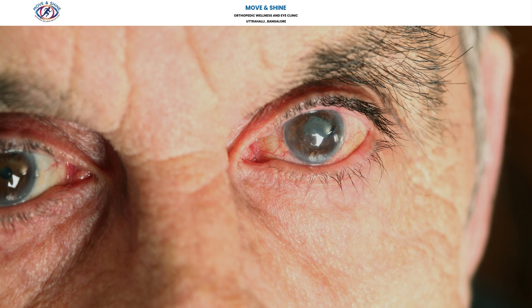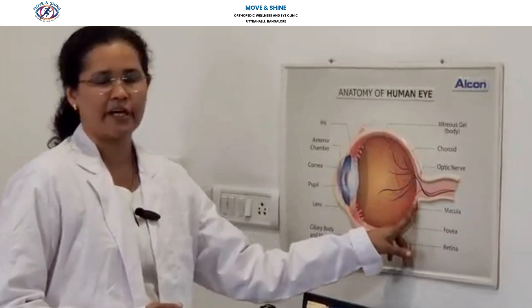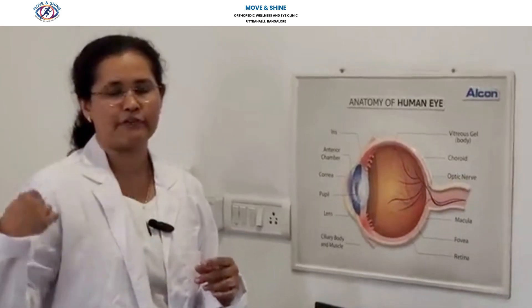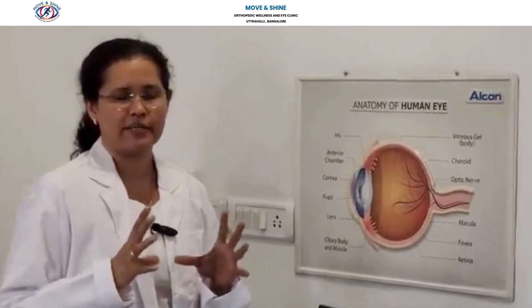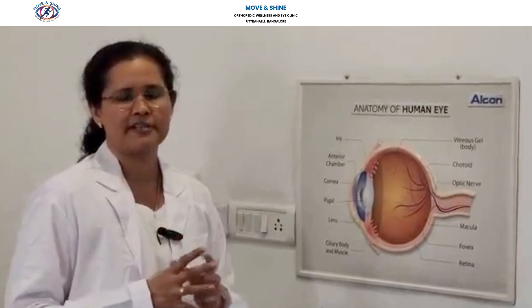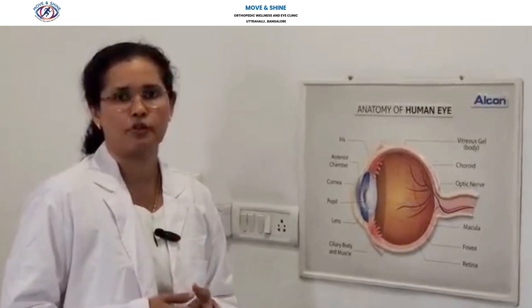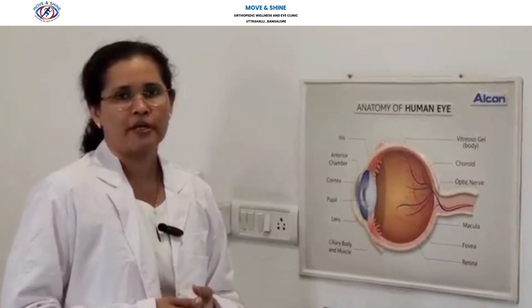What is glaucoma? Glaucoma is when the eye pressures start affecting the nerve of the eye, which reflects in the field of vision and gradually it will affect the central vision. That is called glaucoma.